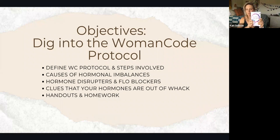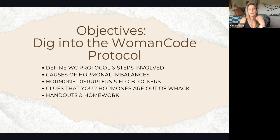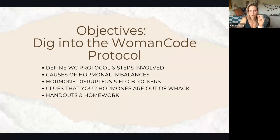Our objectives for today are to define the Woman Code Protocol — it's a five-step process. Over the next couple of weeks we'll break down each step. We'll go into the causes of hormonal imbalances, talk briefly about hormone disruptors and flow blockers — things that are keeping you out of flow.